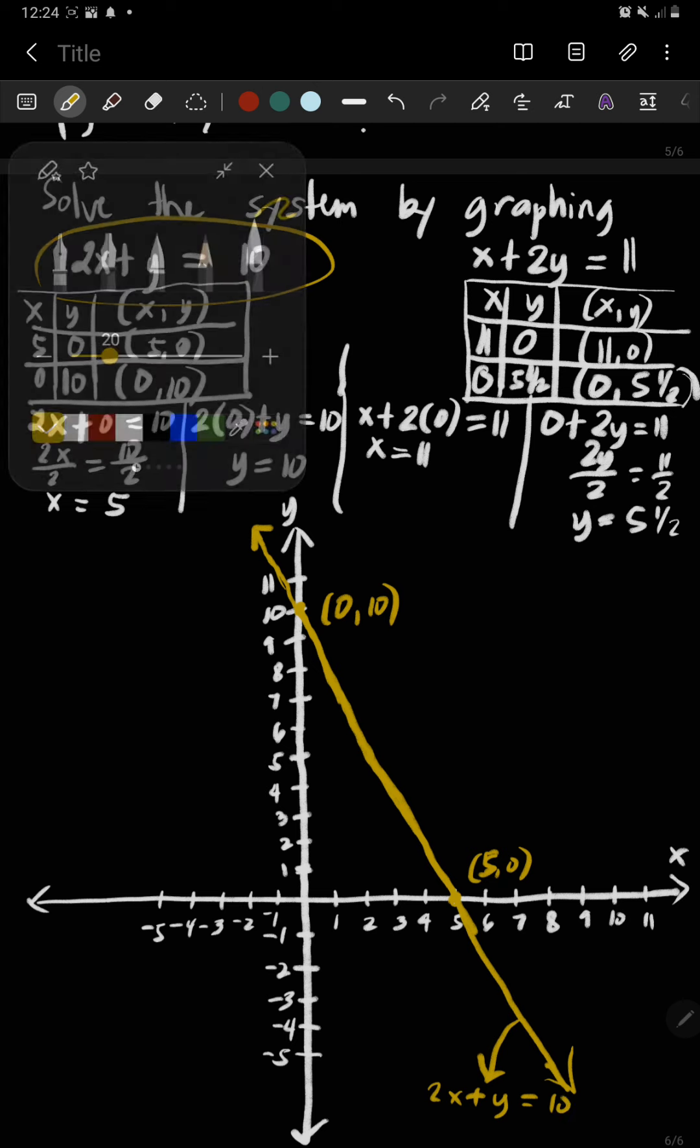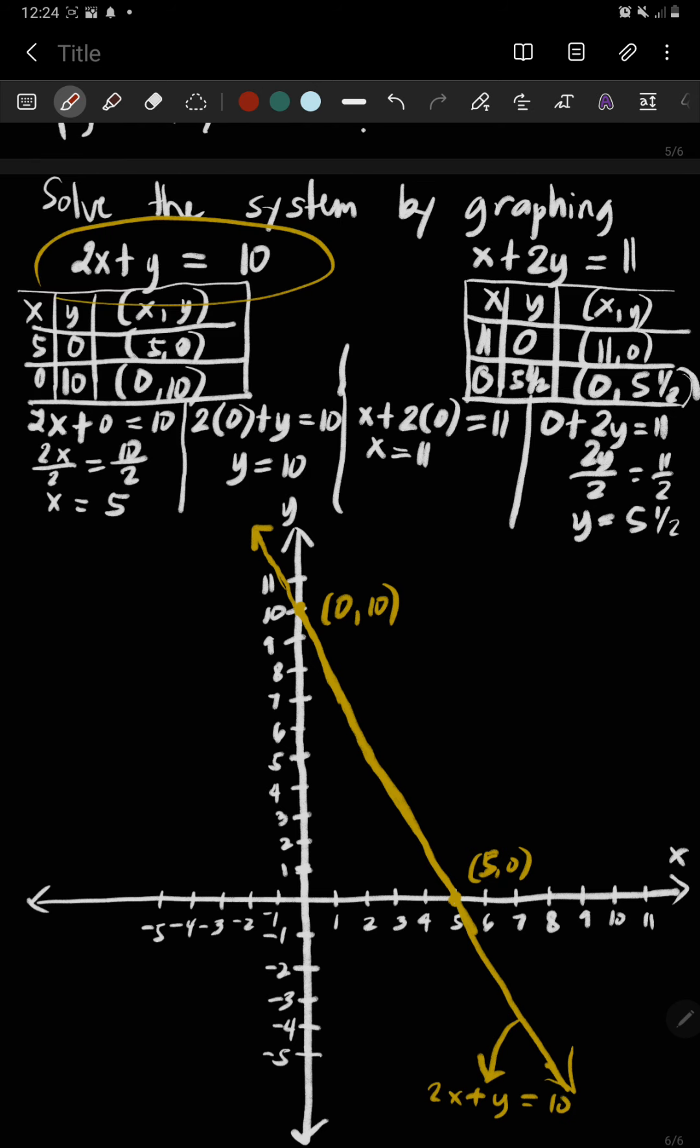So label this as x plus 2y equals 11. You have 11, 0 along the x-axis. Next is 0, 5 and a half along the y-axis between 5 and 6.